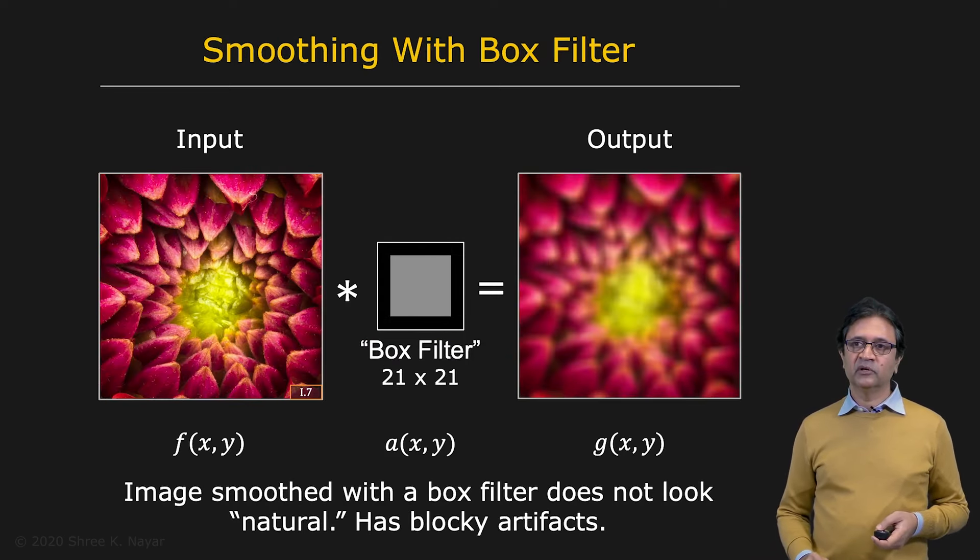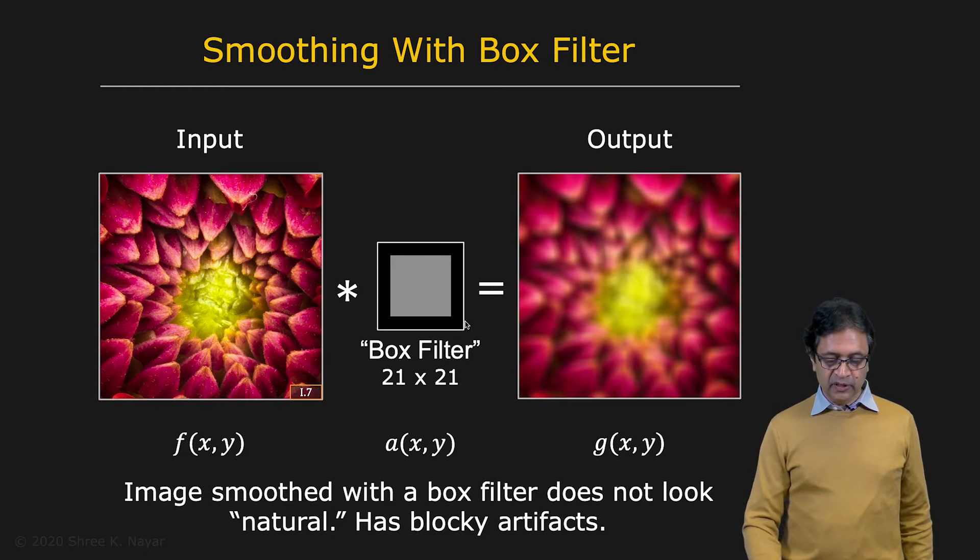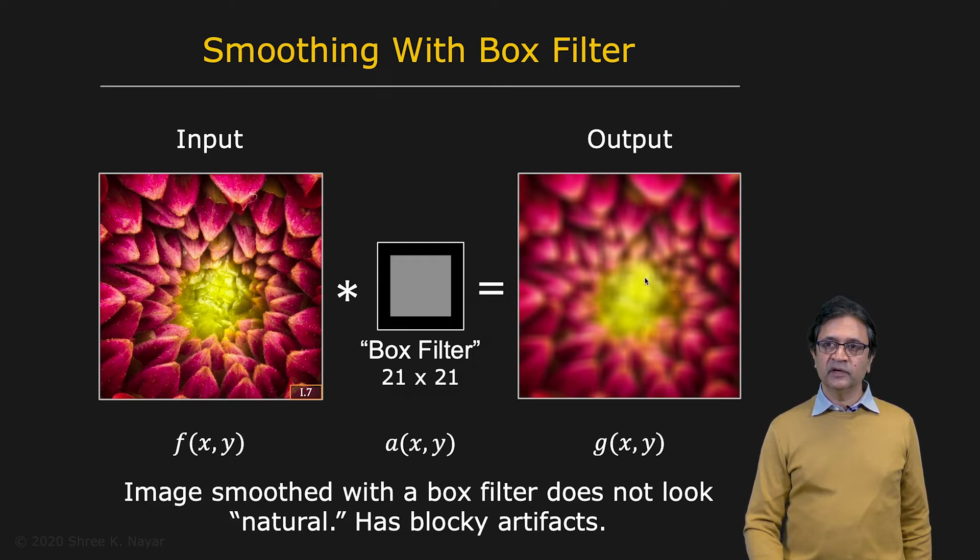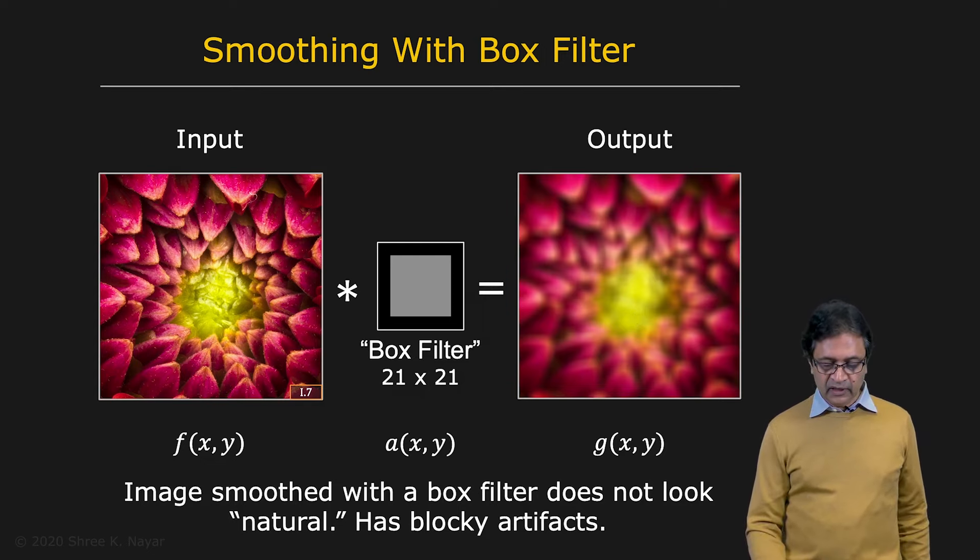Now let's take a closer look at the box filter. Here is a box filter that's a little bit bigger. It's a 21 by 21 box filter. And it gives you, again, it's a normalized box filter. It gives you an output that is, as expected, smoothed because you're trying to smooth the image. But if you look closely at this image, you'll see that it has some blocky artifacts. There's a certain blockiness. There's artifacts that are lining up with the vertical and horizontal axes. And so that is an undesirable effect.